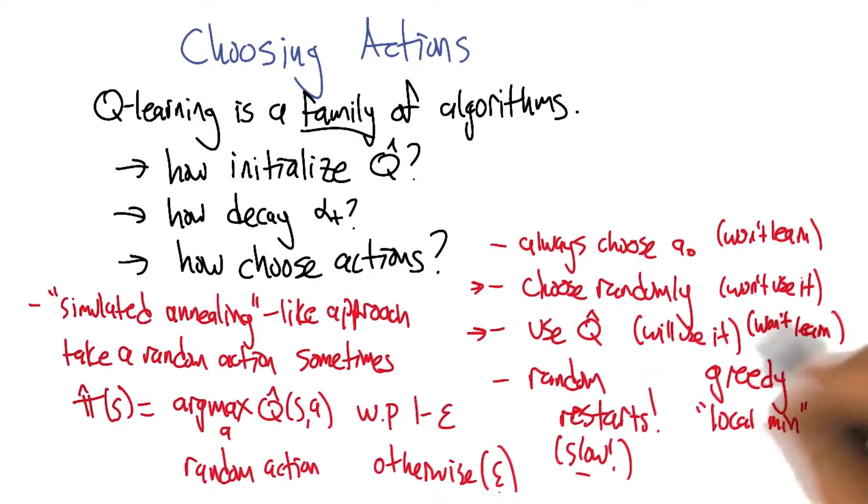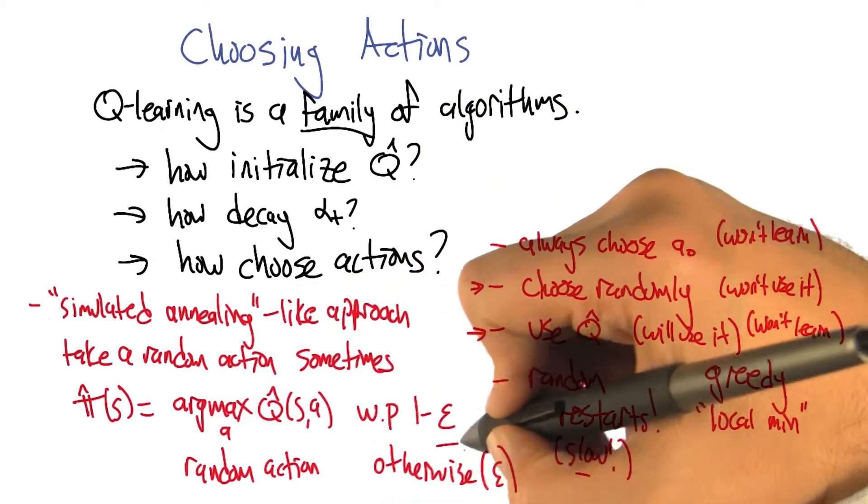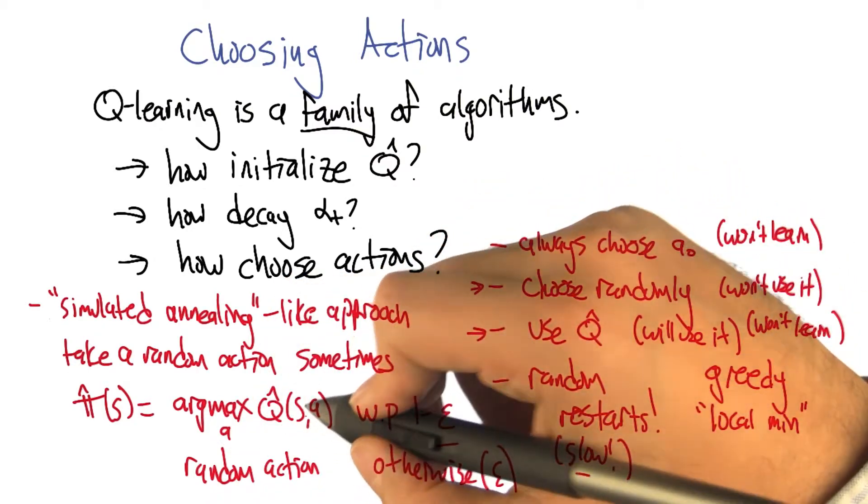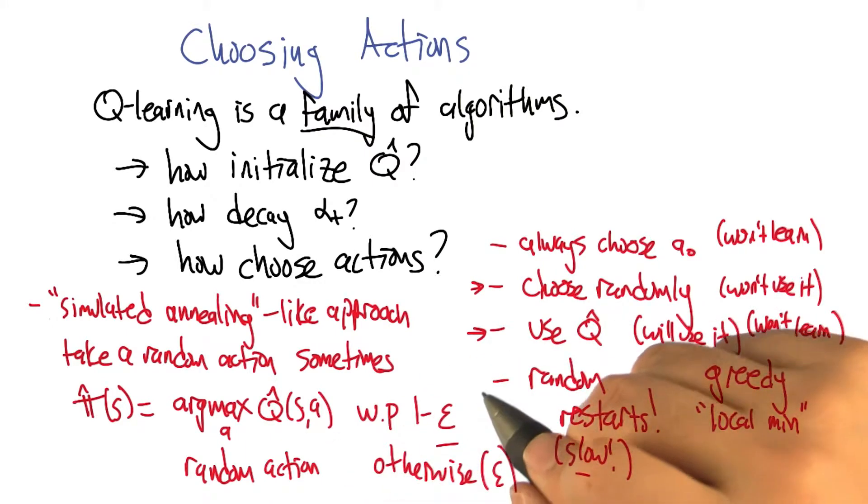So, and yet most of the time we're, you know, we're spending, assuming epsilon is small, we're spending a lot of our time taking good actions or actions that we think are good. But we're always holding out some probability of taking other actions to help us improve our Q hat.